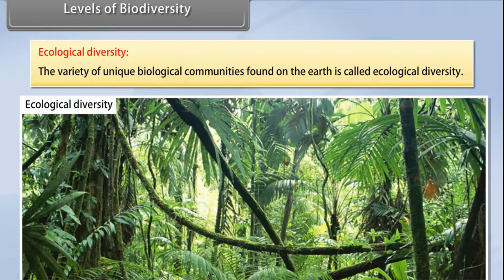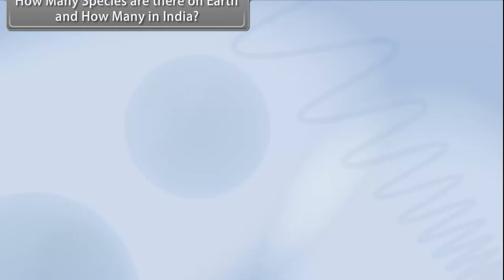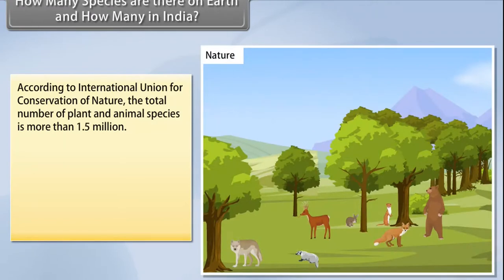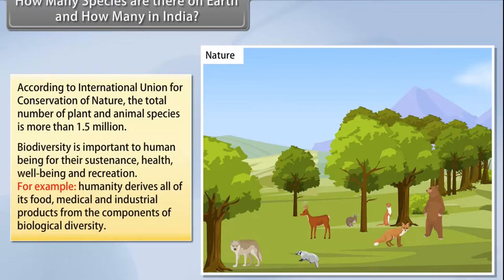Ecological diversity refers to the variety of unique biological communities found on the earth. According to the International Union for Conservation of Nature, the total number of plant and animal species is more than 1.5 million.